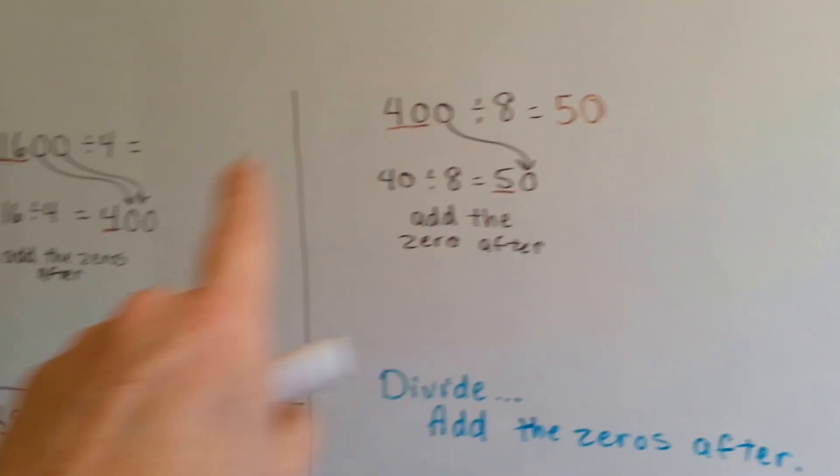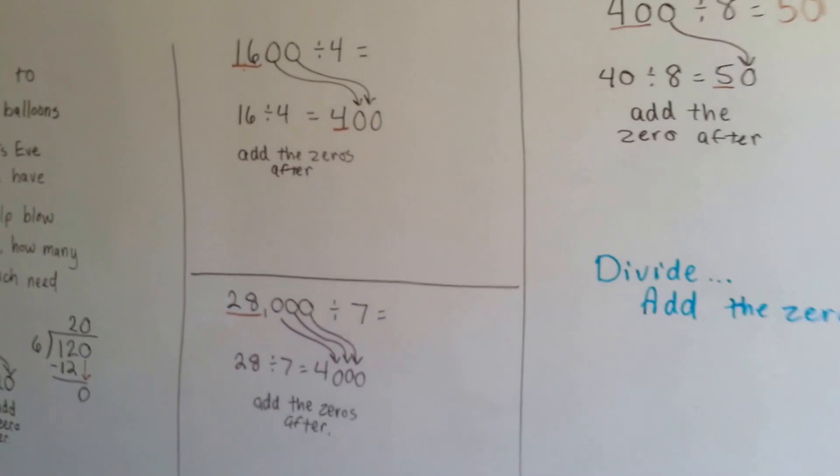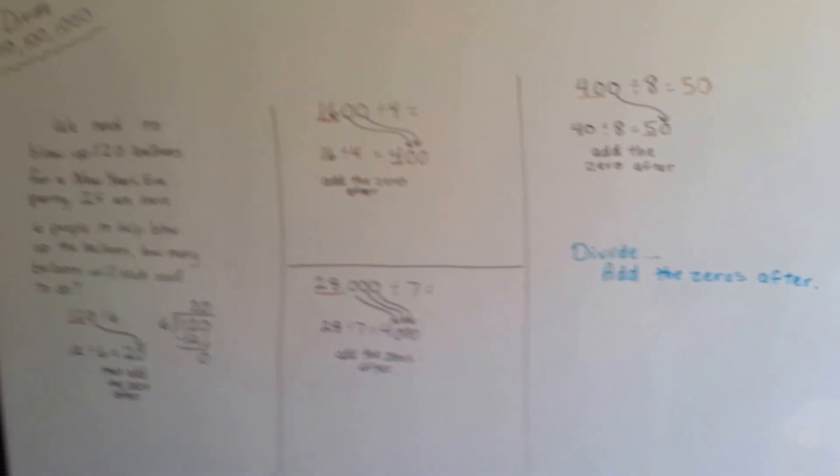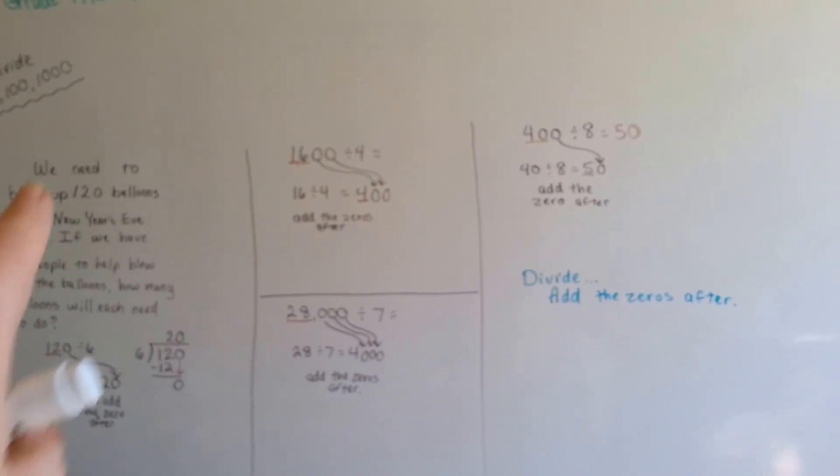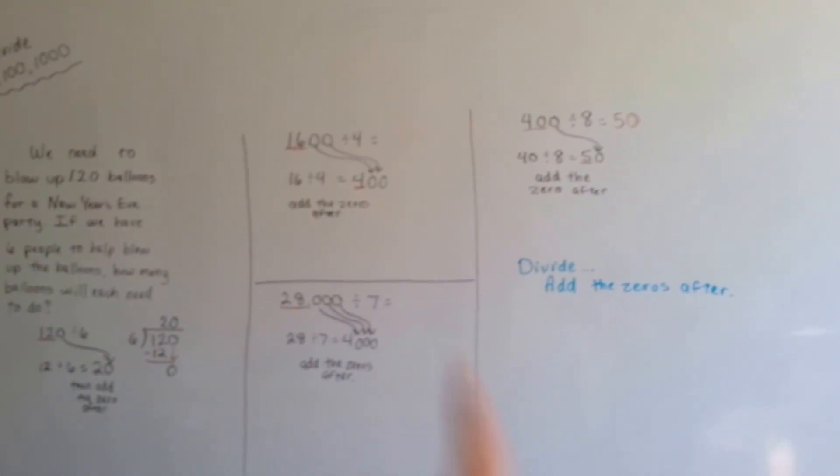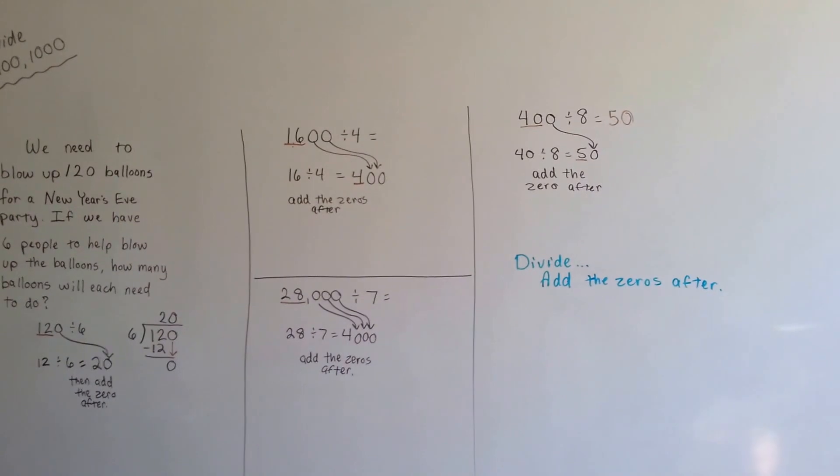You divide and add the 0's after. That's if it ends with 0's. You can't do that if it ends with other numbers. It's only when you're dividing by 10, 100, 1,000, 10,000, 100,000. As long as there's 0's there, you can do it this way and add the 0's after.